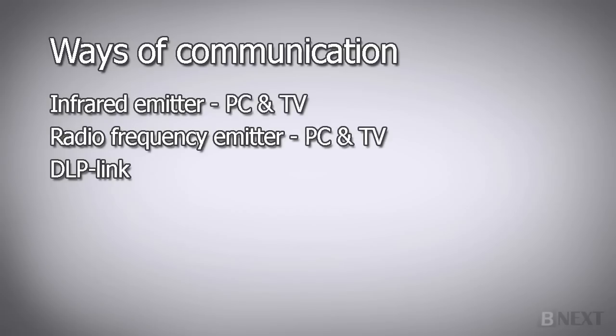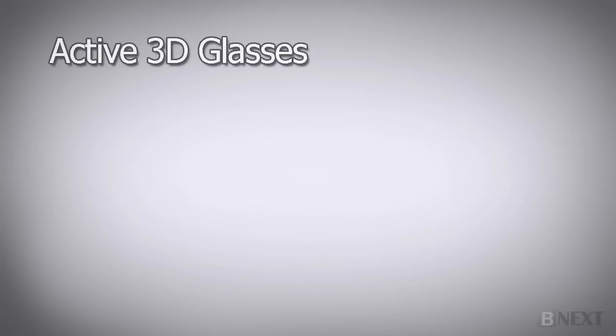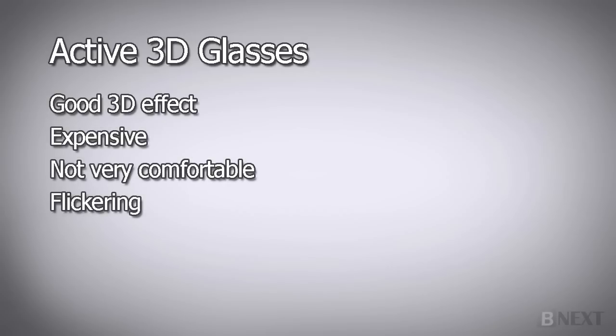3D TVs and 3D PCs will usually use an emitter, whereas DLP projectors will usually use the DLP link technology. The 3D effect is very good when using active shutter 3D glasses. The main disadvantages are that they are expensive, that they are not very comfortable, and there is flickering which can sometimes cause mild dizziness.